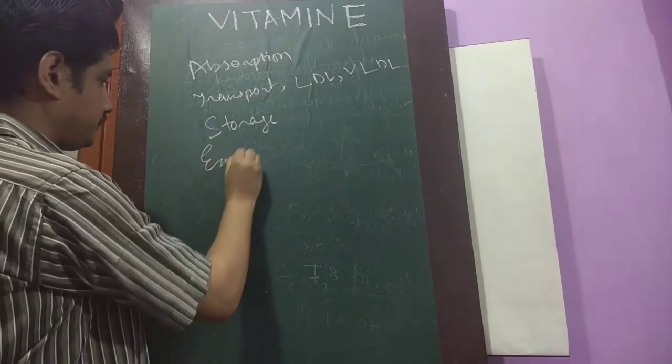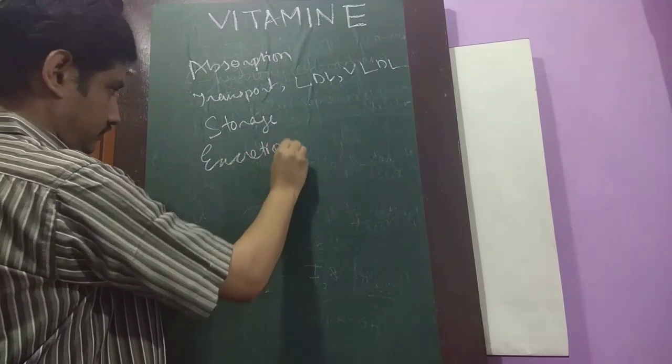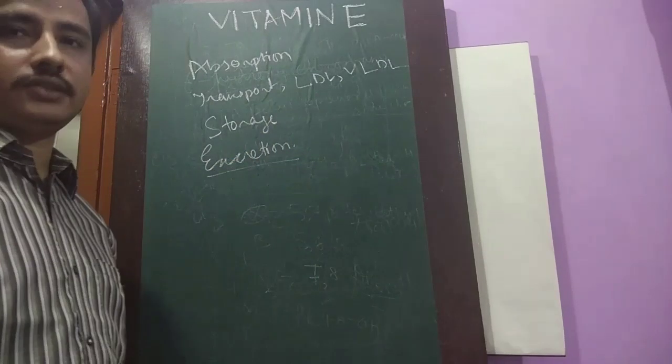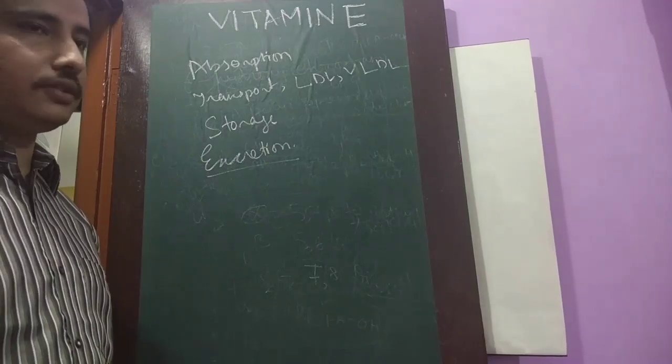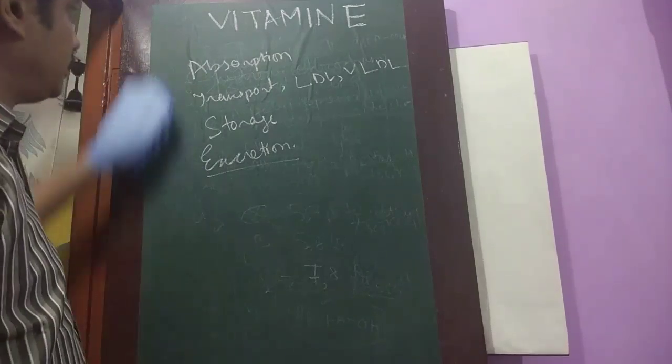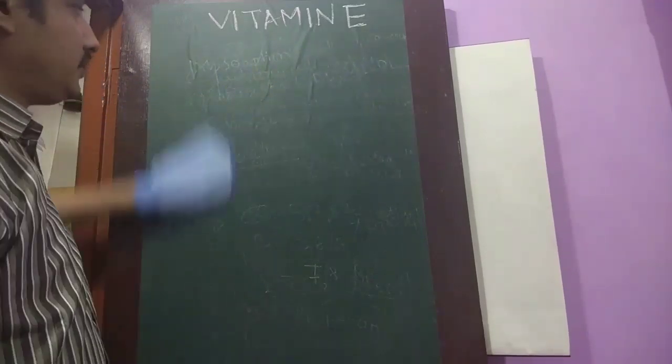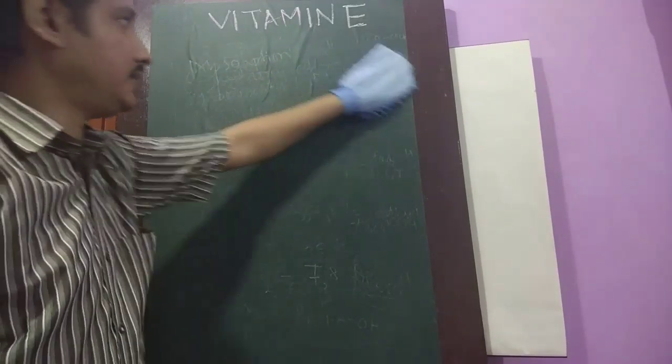Then excretion. The chromene ring and the isoprenoid side chain is oxidized first. Then it is conjugated with glucuronic acid and it is excreted in the bile. And the plasma level of vitamin E is less than 1 mg per deciliter.